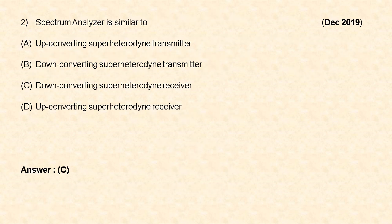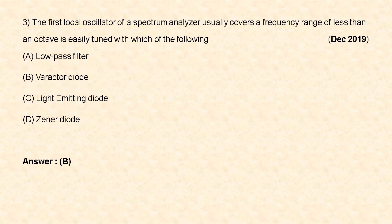Next question (December 2019): A spectrum analyzer is similar to: (a) up-converting super-heterodyne transmitter, (b) down-converting super-heterodyne transmitter, (c) down-converting super-heterodyne receiver, (d) up-converting super-heterodyne receiver. Since the spectrum analyzer converts higher frequencies to measurable quantities, it is similar to a down-converting super-heterodyne receiver — option C is correct. Next question (December 2019): The first local oscillator of a spectrum analyzer, covering a frequency range of less than an octave, is usually tuned with a varactor diode — option B is correct.